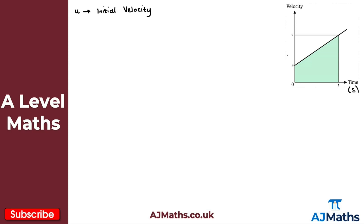We also have v, which represents the final velocity. Just to note, the graph extends a little bit further — ignore that and think of the point where the particle stops as the final bit of motion. Our final velocity is v, and that stops at time t. So at t equals zero, our initial velocity is u, and when our particle stops we have our final velocity of v.